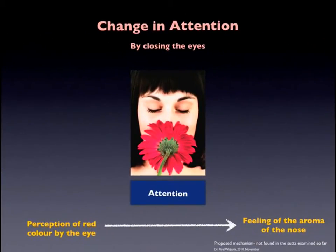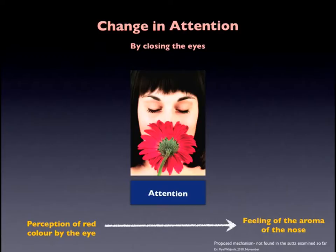This is also illustrated in this slide, which shows a change in attention by closing your eyes. The same example is taken here: perception of the red color by the eye will soon change to feeling of the aroma of the nose just by closing your eyes. These things happen at very rapid speed — less than a nanosecond — and it's very hard to keep track of, even for a trained mind.